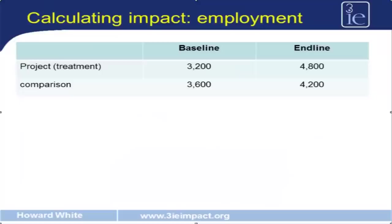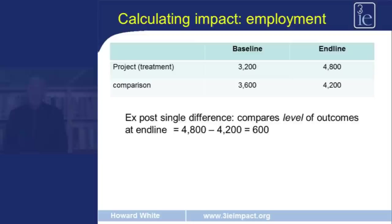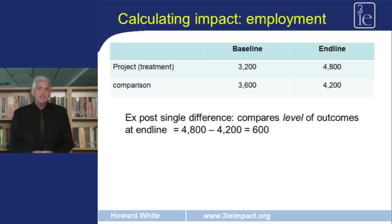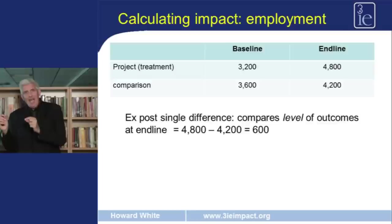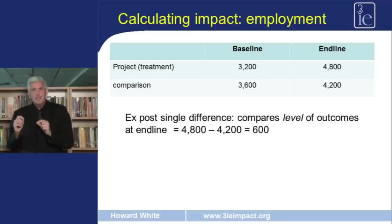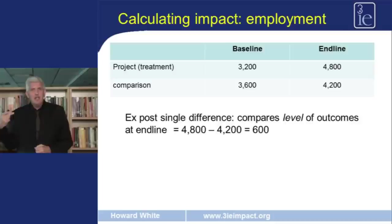There are two ways to calculate the project impact. One is the ex-post single difference, which compares the level of outcomes at the end of the project — calculated after the project. The single difference simply subtracts comparison area outcomes from project area outcomes: 4,800 minus 4,200 equals 600.